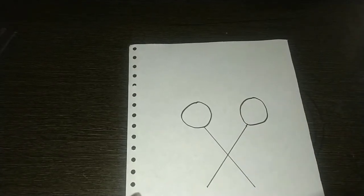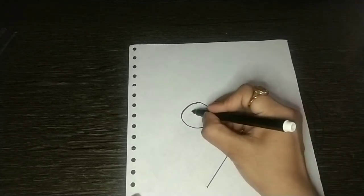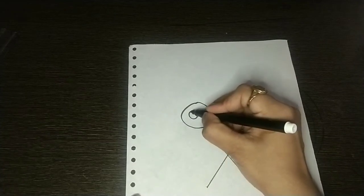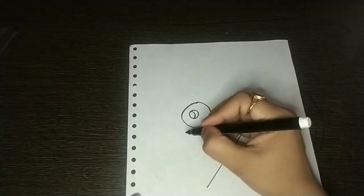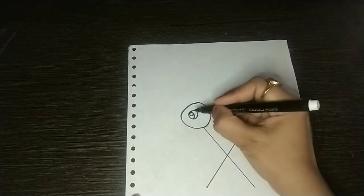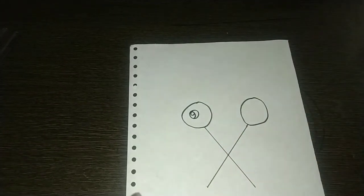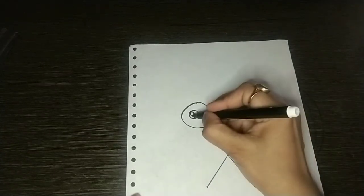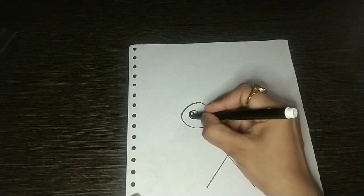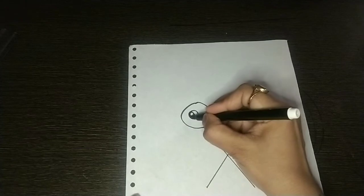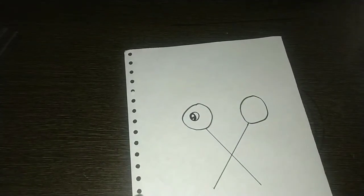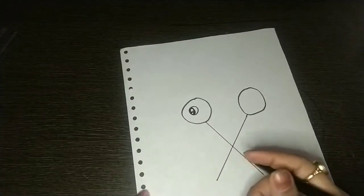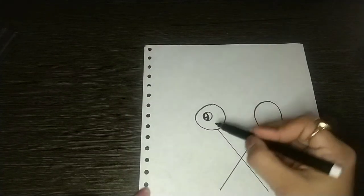Then one more circle inside and then like this, one big circle and one small circle, and color the rest of the area like this. Now what we will do?